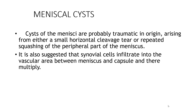Regarding meniscal cysts: a meniscal cyst usually occurs when the meniscus is torn and synovial fluid escapes from the mouth of the tear into the adjacent tissue. It acts like a one-way valve, preventing fluid from escaping back into the knee — similar to a tension pneumothorax. It is also suggested that synovial cells infiltrate into the avascular area between the meniscus and the capsule.